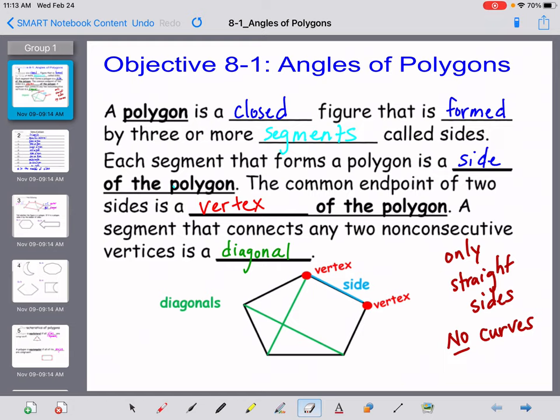Alright, so today starts our unit on polygons. For 8-1 we're going to be working on it all week. A polygon is a closed figure that is formed by three or more segments called sides. Each segment that forms a polygon is a side of the polygon.